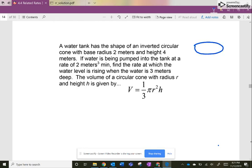So here's my inverted circular cone. Nice. With a base radius of 2. So we have a radius of 2 meters and a height of 4 meters. A height of 4 meters.